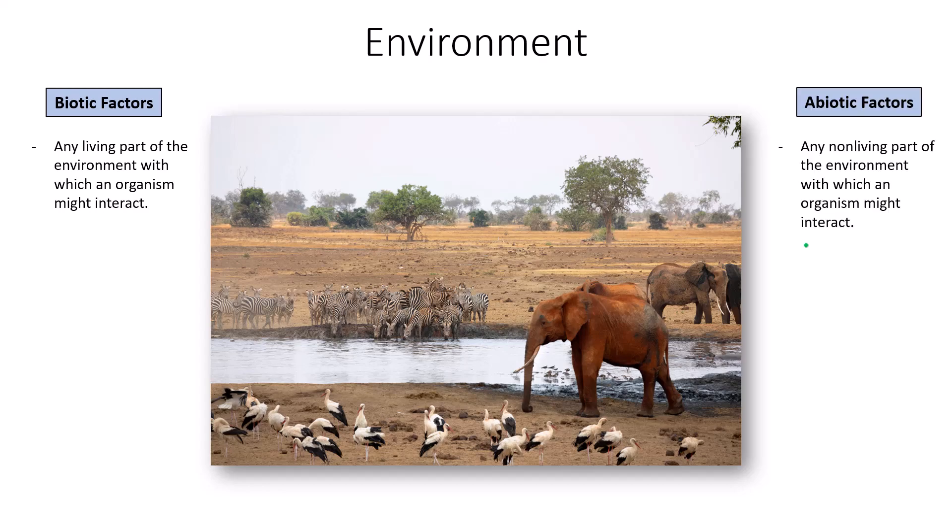There are also a variety of abiotic factors — any non-living part of the environment with which an organism might interact. These are things less likely to stand out, things more taken for granted, like air, water, soil, and CO2. Those are all abiotic — not alive.